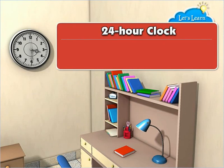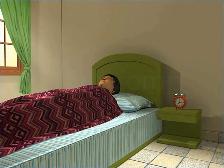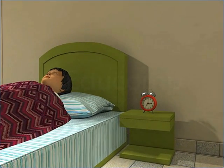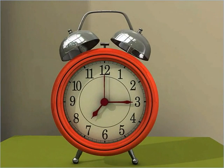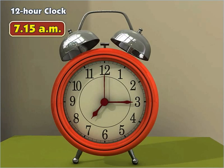24-hour clock. In this lesson, you will learn to tell time using the 24-hour clock and perform simple calculations. Raymond is sleeping soundly but is about to be awakened by his alarm clock. Let's look at the time he set his alarm for. Assuming that it is in the morning, can you state the exact time? That's right — it is 7:15 a.m. This is telling time according to the 12-hour clock. However, do you know there is another way of telling time? Since there are 24 hours in a day, we can also tell time according to the 24-hour clock.